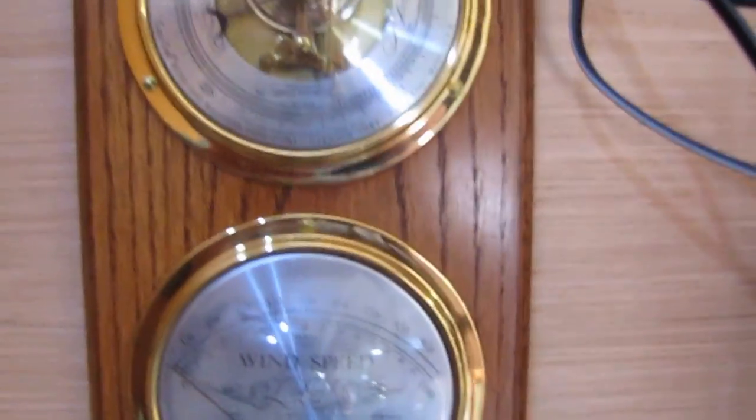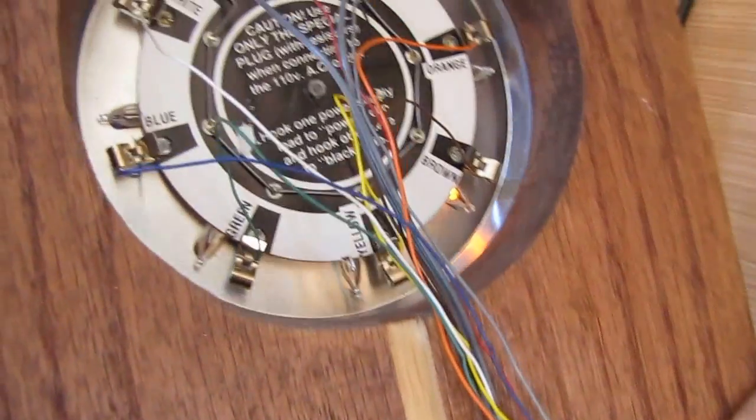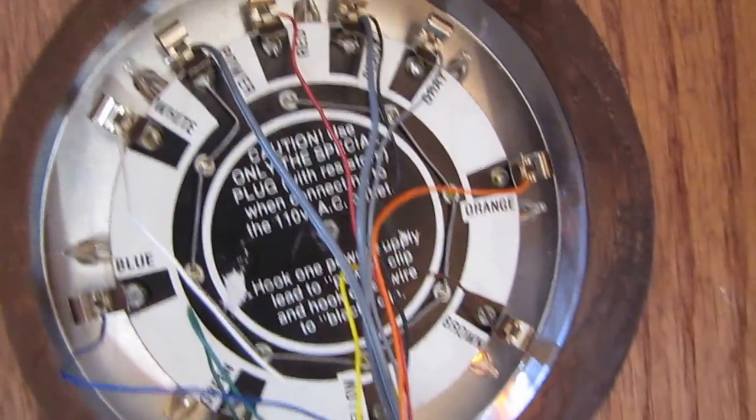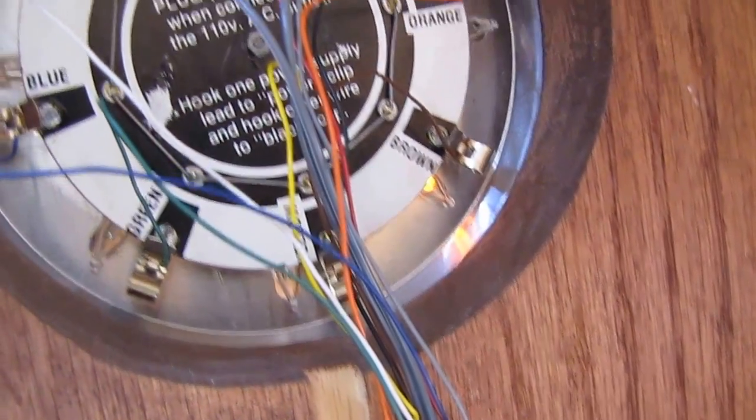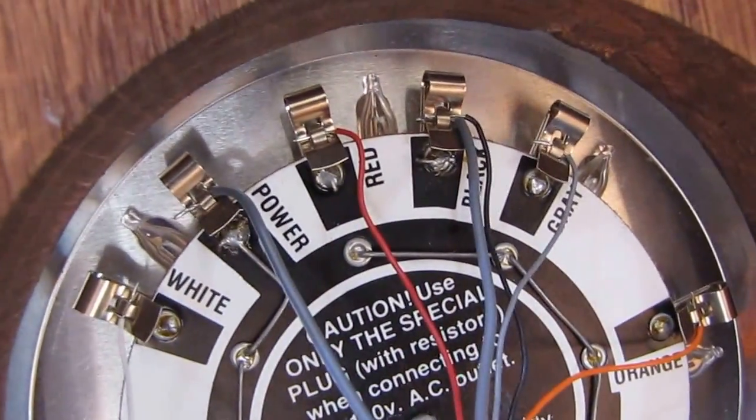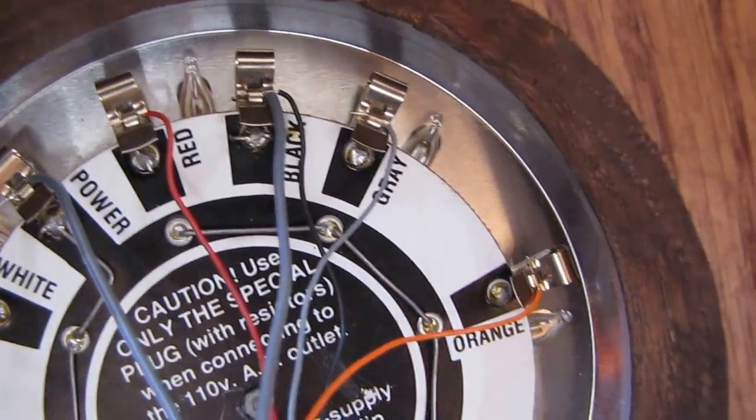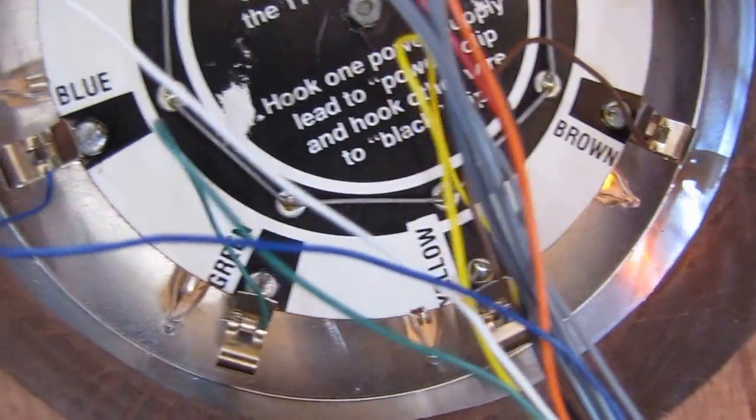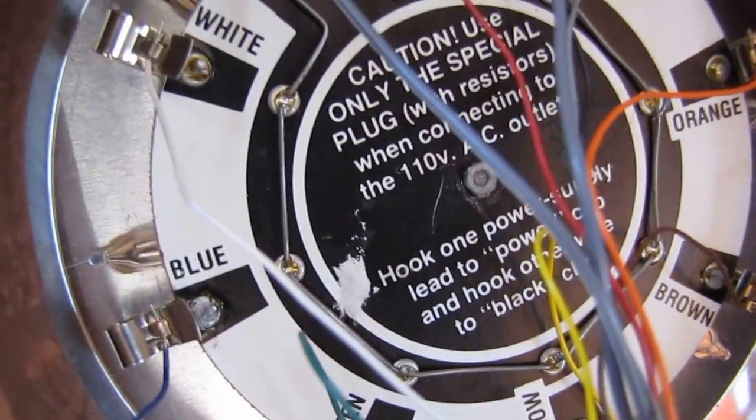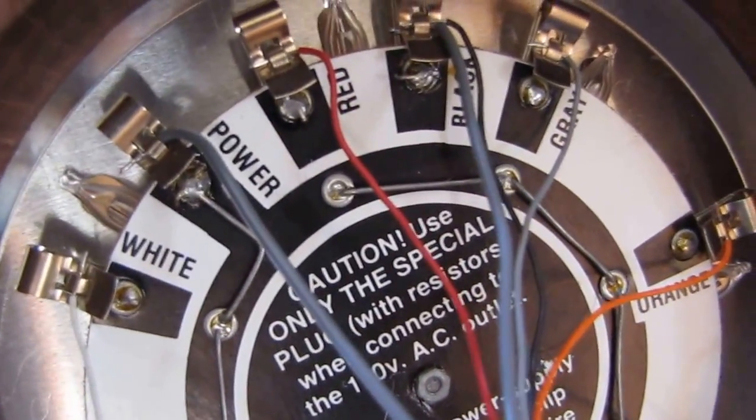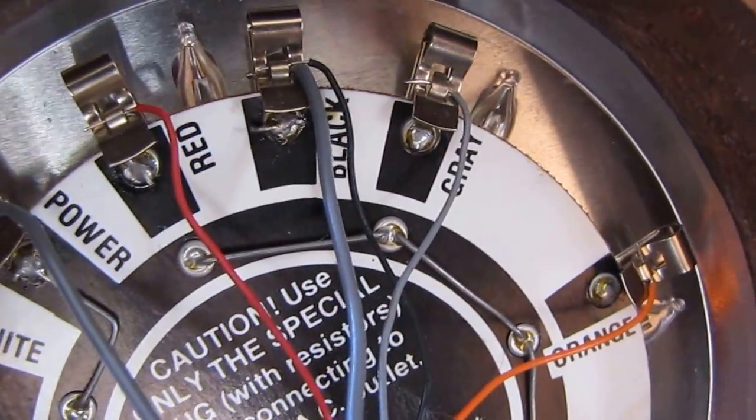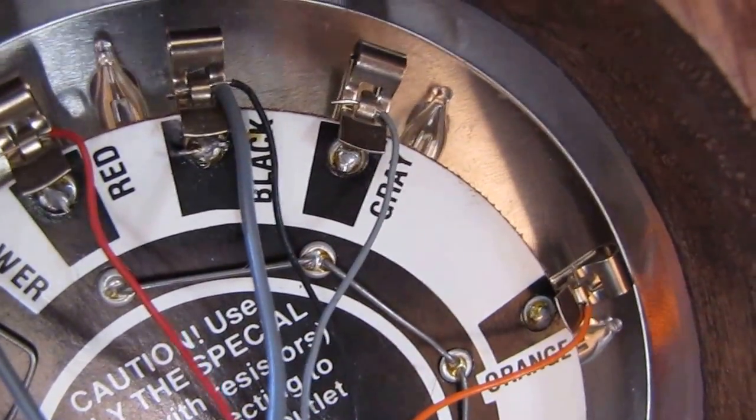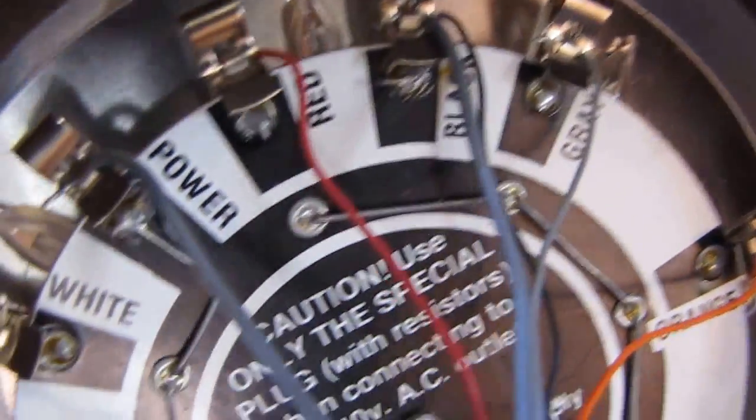But yeah, I mean, this thing was a bear. It was pretty, wasn't that bad. But as you see, all the wires are color-coded. That's what I meant by eleven conductor wires. Red, blue, gray, orange, brown, yellow, green, blue, white, the power cord, and the black is the common. So that goes into the black. And the black where the wind indication is too. Then here's your power.